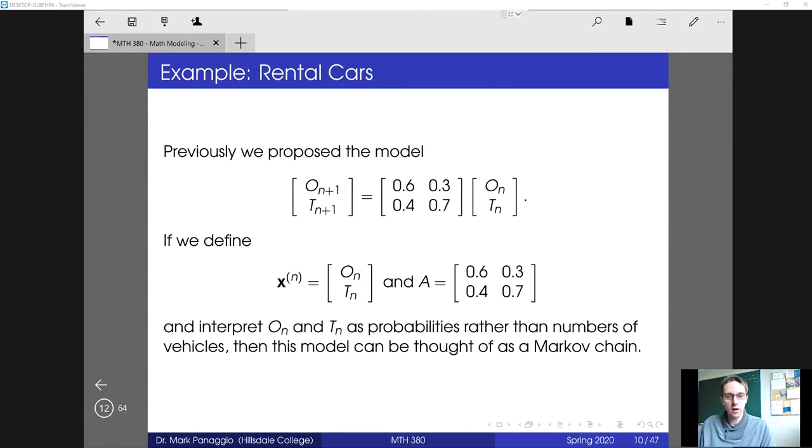Let's actually look at an example to see how this all works. So previously, we looked at this rental car model, where we had the probability that a car that starts in Orlando stays in Orlando on the next day, it was 0.6. And then it was 0.4 that a car will move to Tampa. And from Tampa, there was a 70% chance that they, the chance that they stayed and a 30% chance that it would go to Orlando. And we set up a model for keeping track of the number of cars. But what we didn't really realize, we were thinking about that deterministically, we thought of those as percentages, 60% stay, 70% stay, things like that.